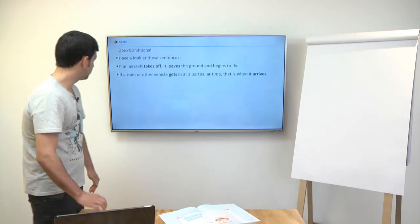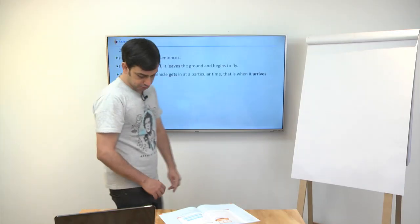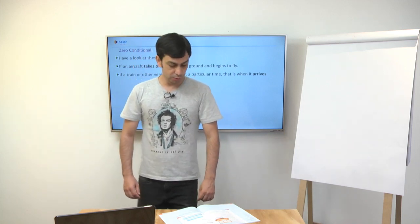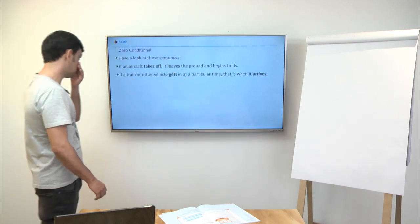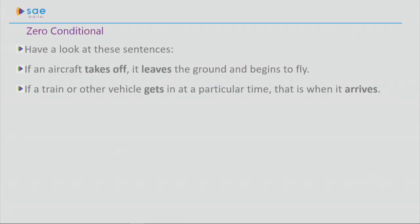So if you move to page 345, we can have a look at zero conditionals. Take a look at these sentences. If an aircraft takes off, it leaves the ground and begins to fly. If a train or other vehicle gets in at a particular time, that's when it arrives. I highlighted here some verbs, some structures that are the focus of today's class.